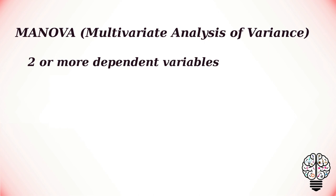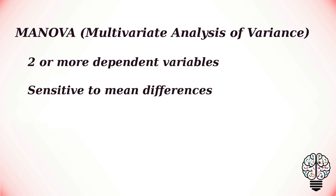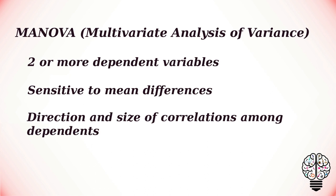We don't use multiple ANOVAs because MANOVA is sensitive to mean differences and also to the direction and size of correlations among the dependent variables. For example, we may conduct a study where we try two different textbooks and we are interested in the student's improvement in two subjects. In this case, improvements in these two subjects are the two dependent variables, and our hypothesis is that both together are affected by the difference in textbooks. MANOVA could be used to test this hypothesis.